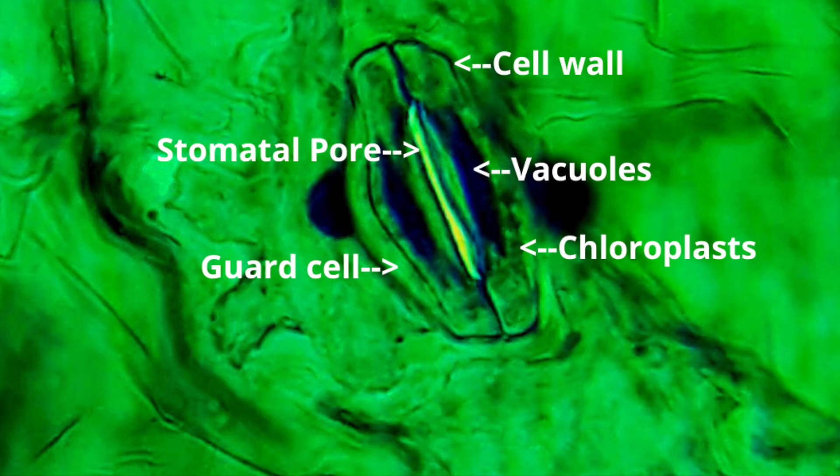There is the stomatal pore which opens and closes by changing the shape of the guard cells. They control the size of the stomatal aperture or the stomatal pore. Chloroplasts are the tiny spheres that we can see inside the guard cell.